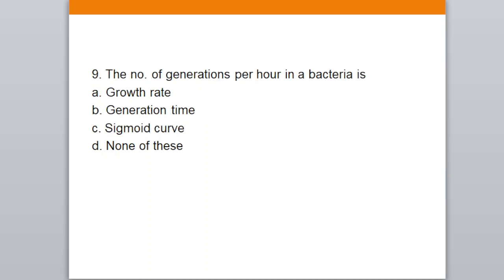Question number nine: the number of generations per hour in bacteria is — A. growth rate, B. generation time, C. sigmoid curve, D. none. Your correct answer is B — generation time.